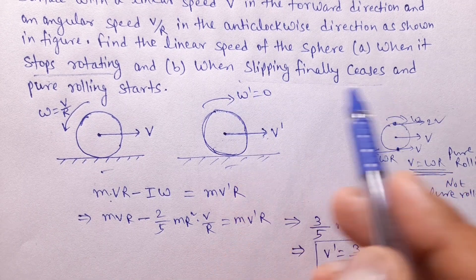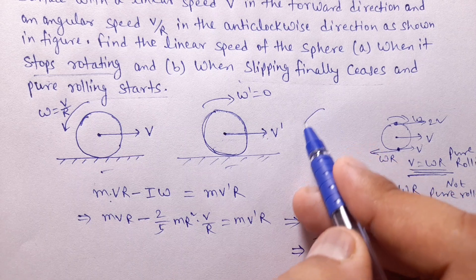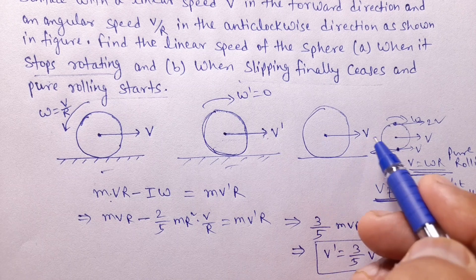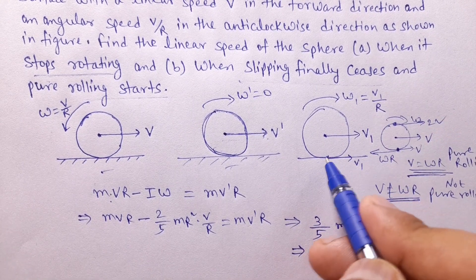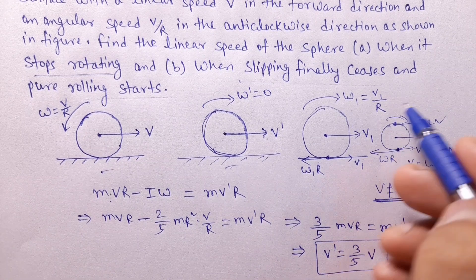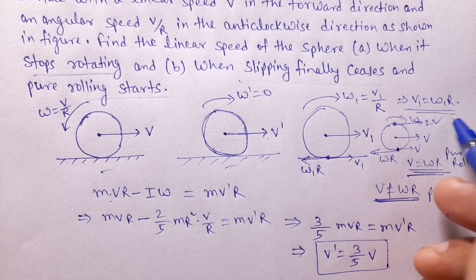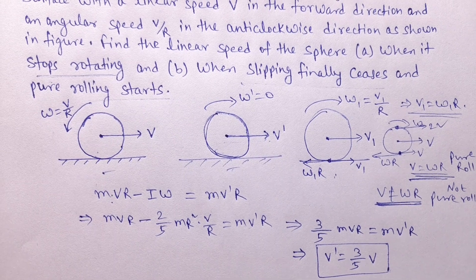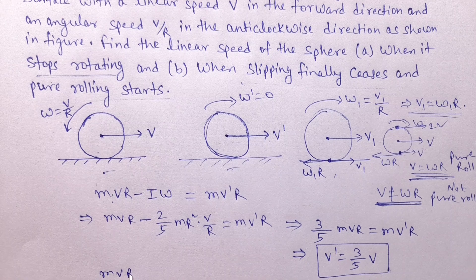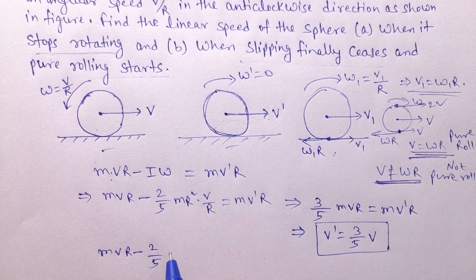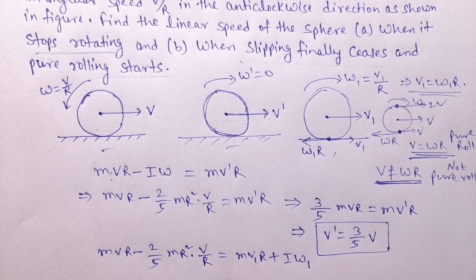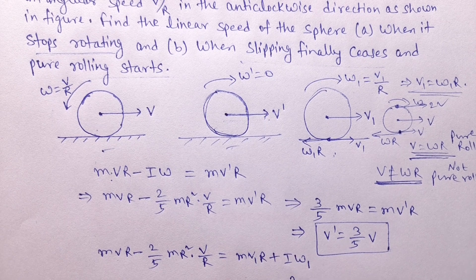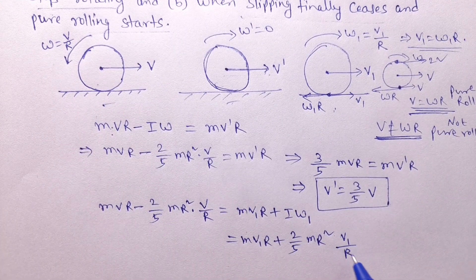For the final case, when slipping finally ceases and pure rolling starts, let the center of mass velocity be v1 and angular velocity be omega1, such that omega1 equals v1/R. The point moves forward with v1 and backward with omega1·R so that v1 equals omega1·R. Apply angular momentum conservation between the initial situation and the pure rolling situation: m·v·r minus (2/5)·m·r²·(v/r) equals m·v1·r plus I·omega1.